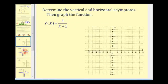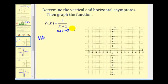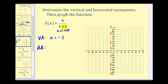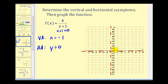Now let's look at our first full example: determining the vertical and horizontal asymptotes and then graphing the function. The numerator and denominator cannot be factored. For the vertical asymptote, setting x plus one equal to zero gives x equals negative one. For the horizontal asymptote, the degree of the numerator is zero and the degree of the denominator is one, so the horizontal asymptote is y equals zero — since the numerator stays at four while the denominator grows without bound, making the function approach zero.